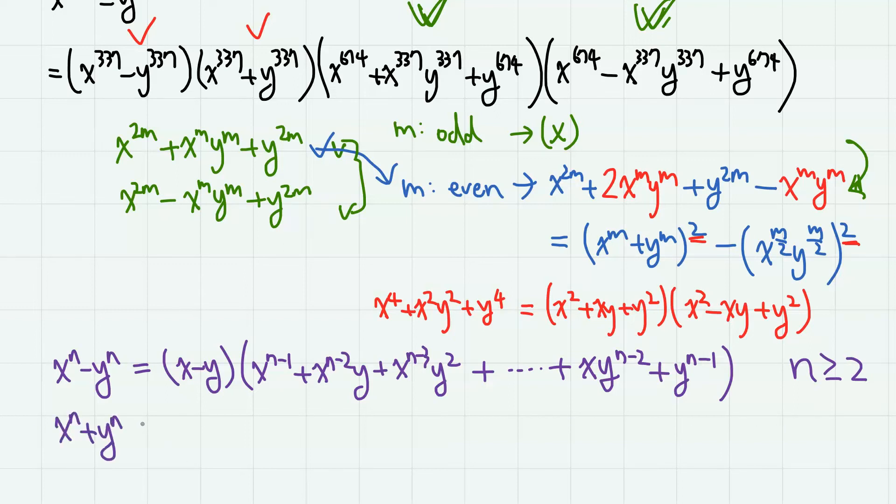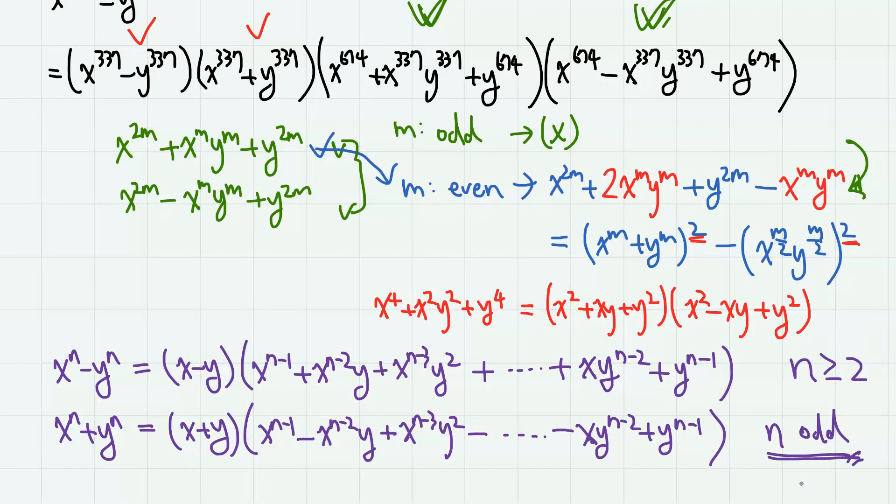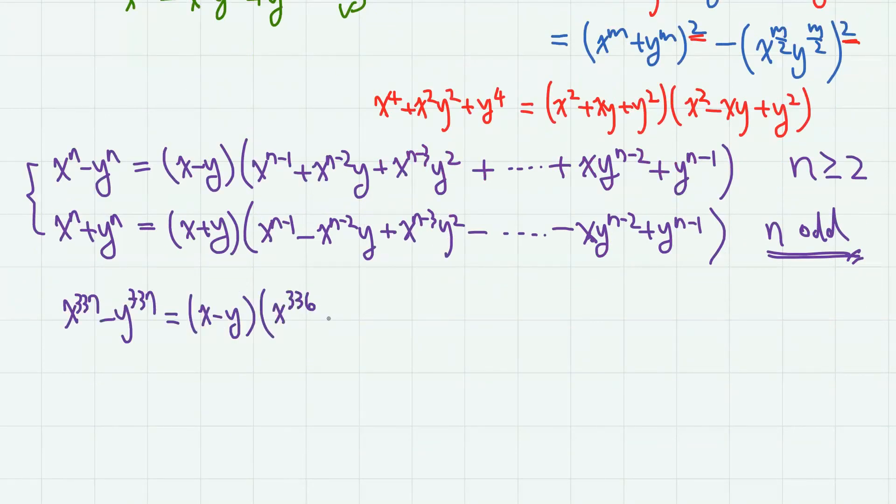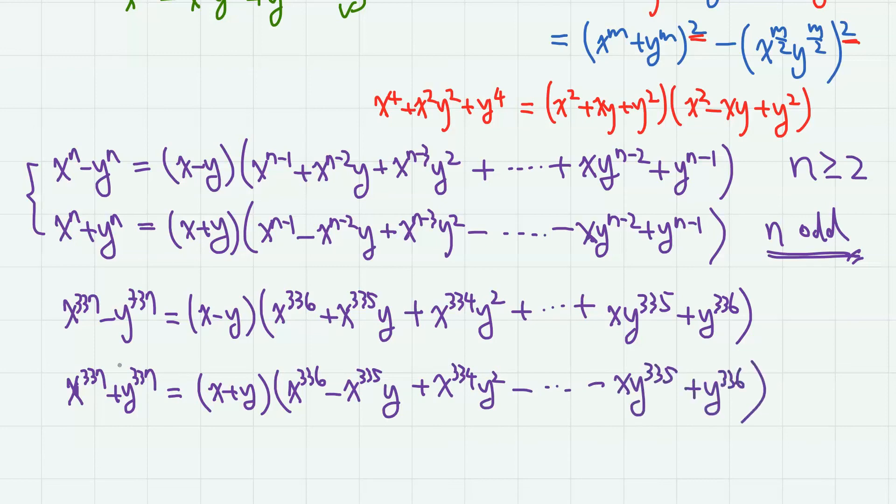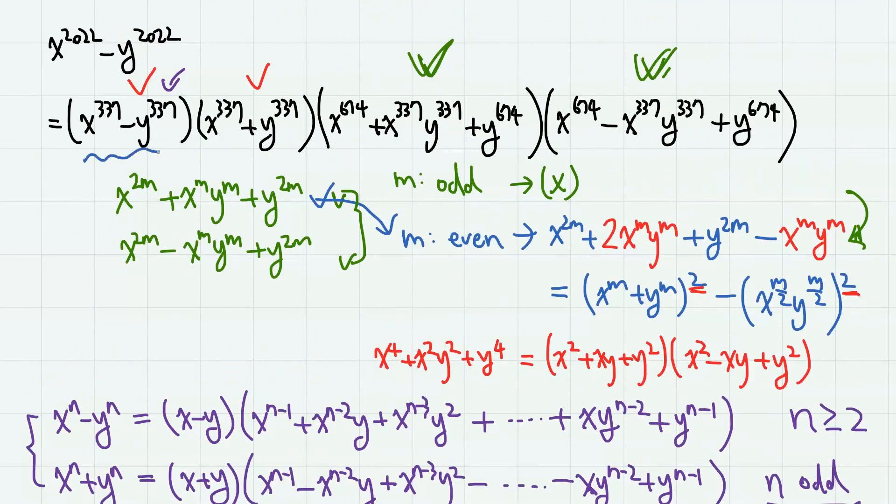And for x to the n plus y to the n, we have this formula only for odd numbers n. And since we have odd number 337 here, we can apply both formulas. So we obtain this and this. So if we apply this formula to here and here and write down our answer...